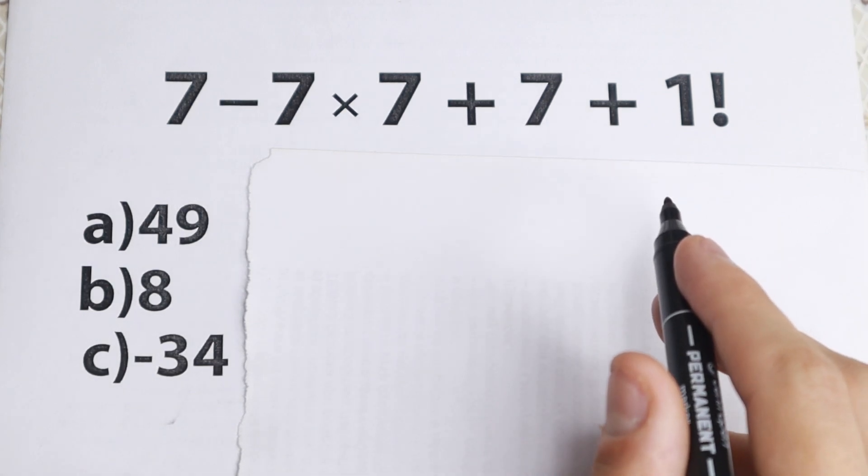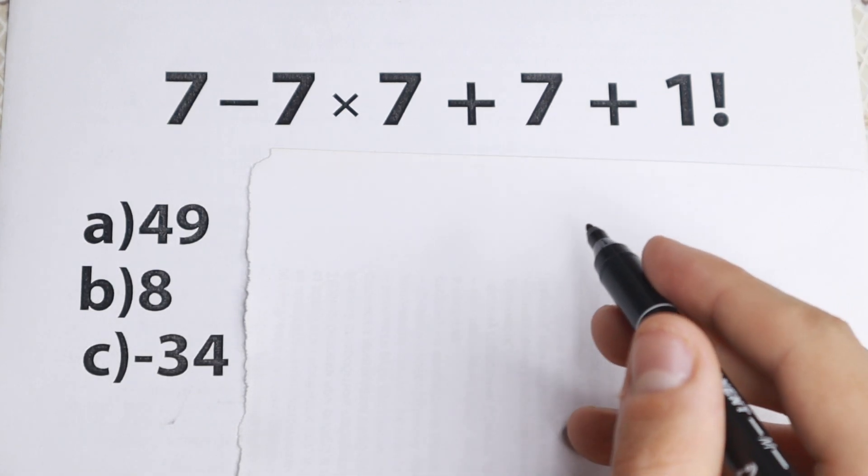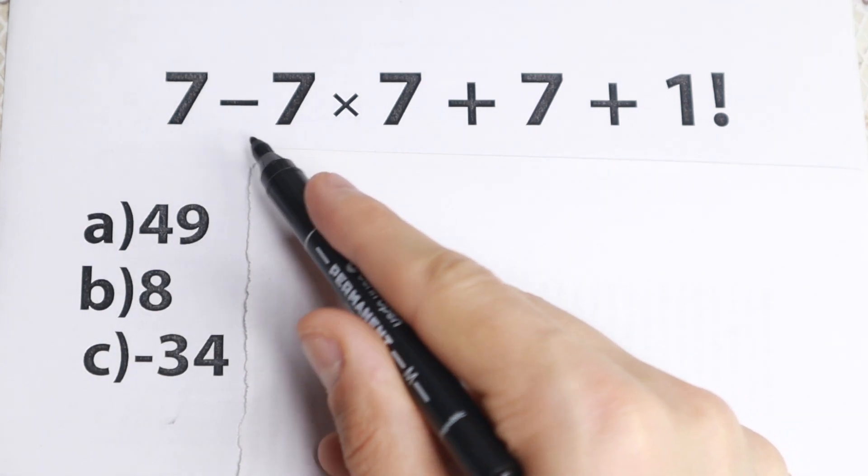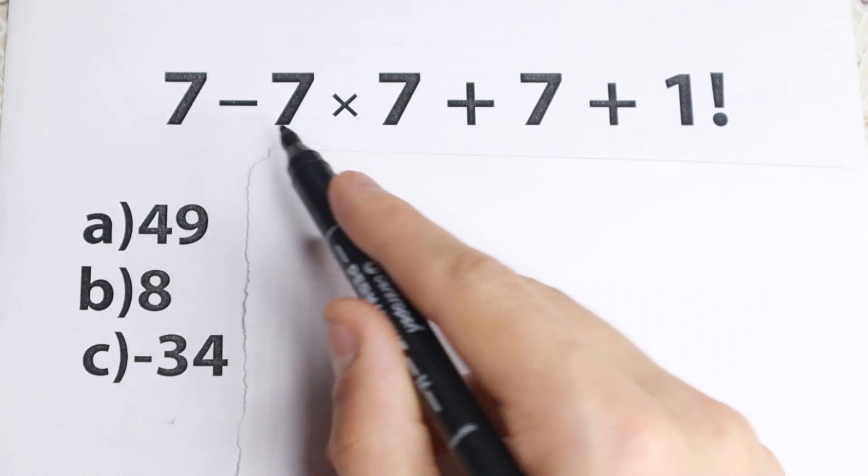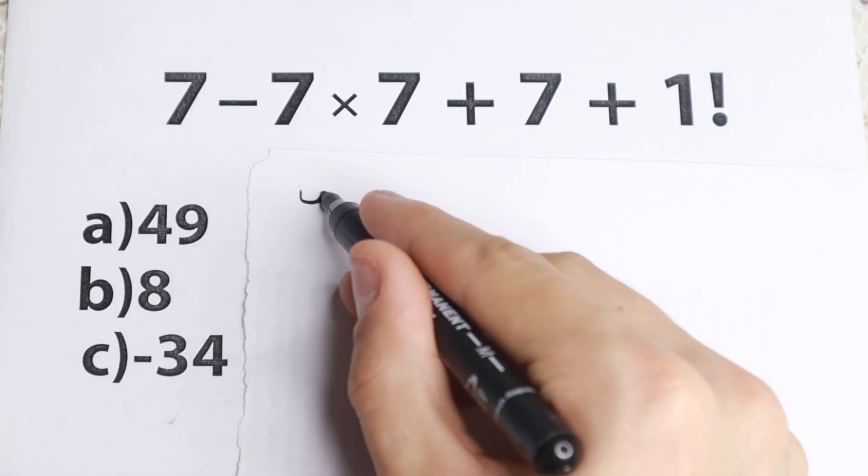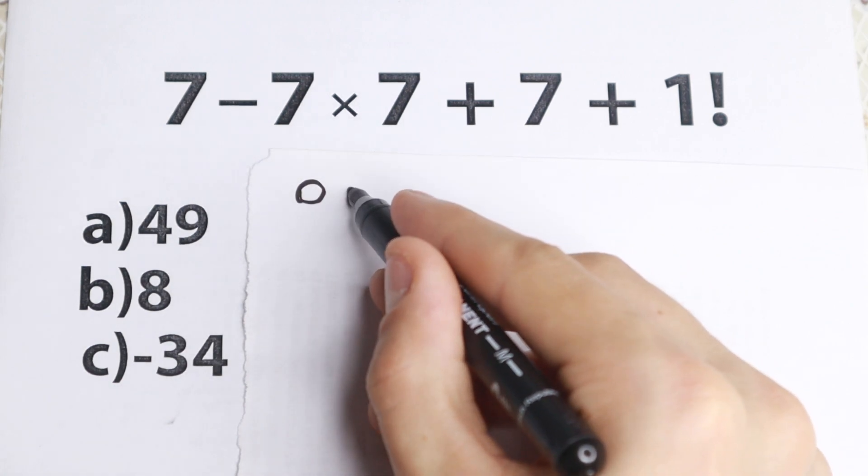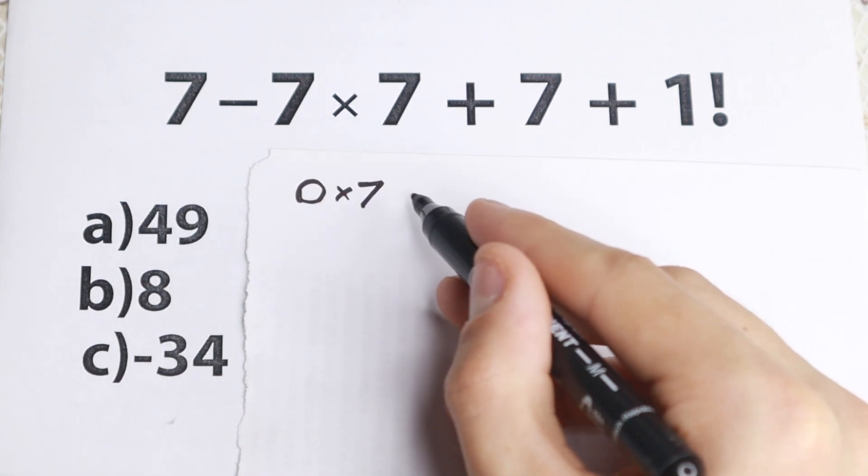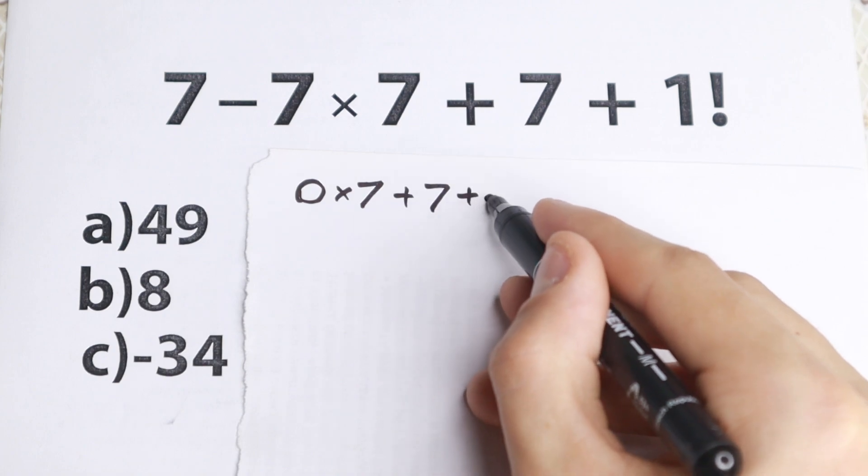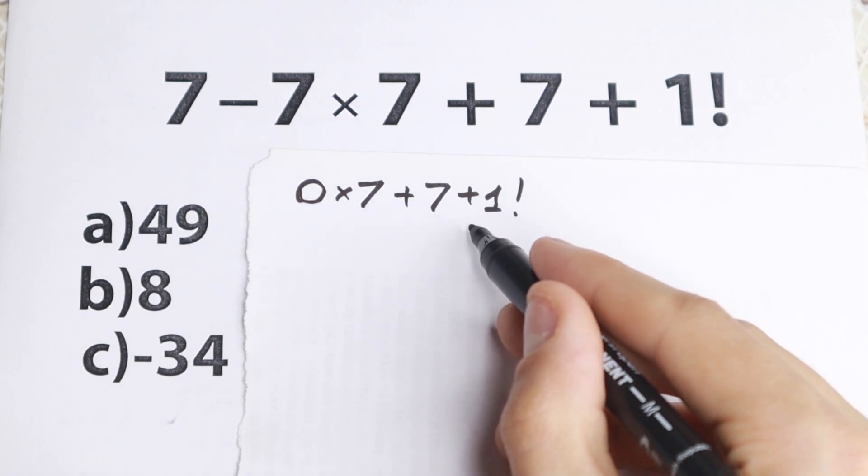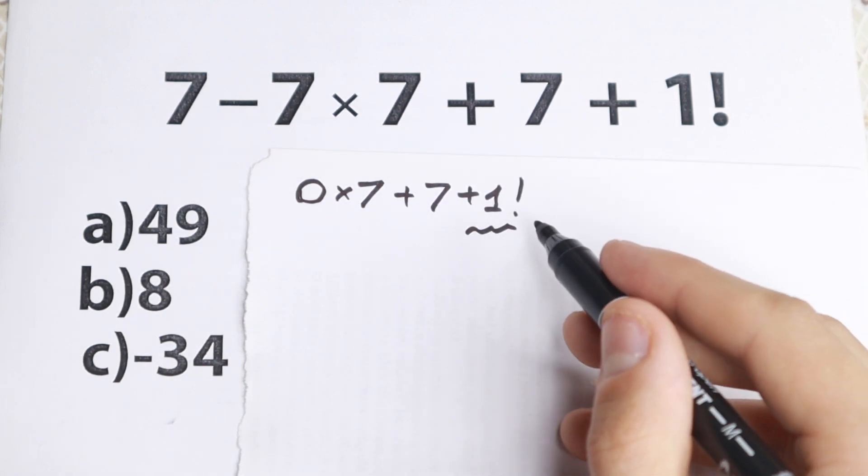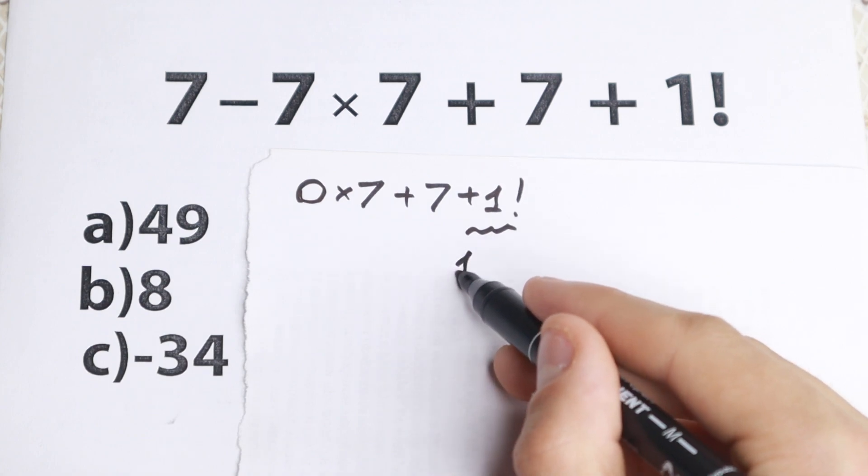So why this question is tricky? Because I see a lot of students do this mistake. They go firstly with this subtraction. So if they subtract 7 minus 7, they will have of course 0. And they go next, like multiplying by 7 plus 7 and plus 1 factorial. From here 1 factorial, all students know that it is equal to 1.